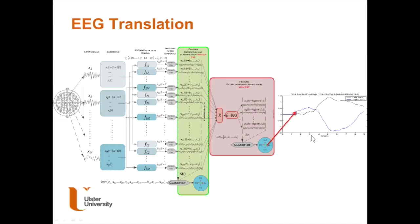To translate motor imagery into control signals, the raw EEG is time-embedded using an embedding dimension and time lag, then fed through fuzzy neural network prediction models that are specialized on different motor imagery time series. After bandpass filtering, feature extraction involves the log variance of signals in specific time windows. Common spatial patterns (CSP) may also be applied, which maximizes variance for one class and minimizes it for another, and the log variance of those spatial components is fed into a classifier.